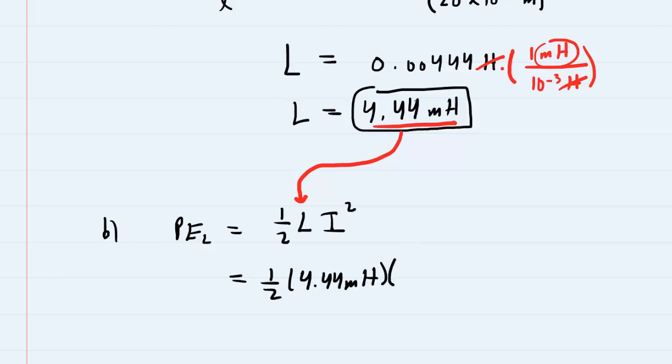If you use the henry's value rather than millihenry's, then your energy answer would be in joules. But we'll keep it in millihenry's so that our answer comes out in millijoules.